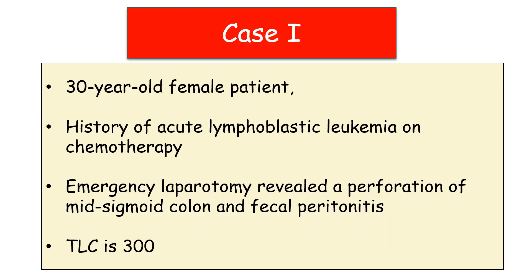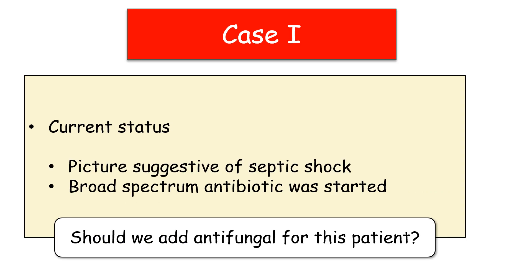We start with four different cases. Case number one: a 30-year-old female patient with a history of acute lymphoblastic leukemia and chemotherapy. Emergency laparotomy revealed a perforation of the mid-sigmoid colon and fecal peritonitis, and the total leukocytic count is 300. The patient has septic shock, broad-spectrum antibiotic was started, and the question is: should we add antifungal for this patient or not?